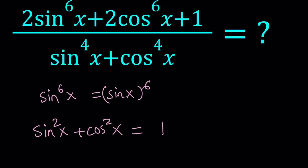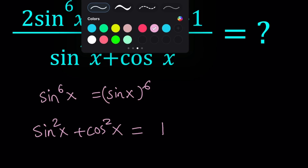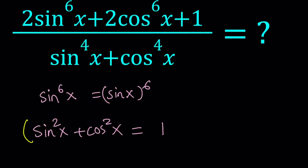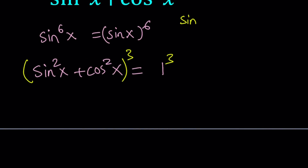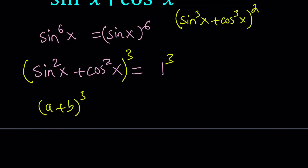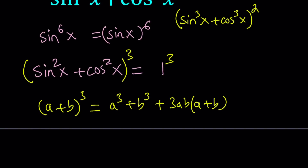I start with the sum of squares, which is 1 — that's a well-known identity. Now I want to cube both sides. The motivation is I want to get 6th powers, and this is one way to do it. Obviously you could also start with sum of cubes and square it, but you don't know anything about the sum of cubes, so we want to start with squaring something well-known. I'm going to use the formula for (a + b)³.